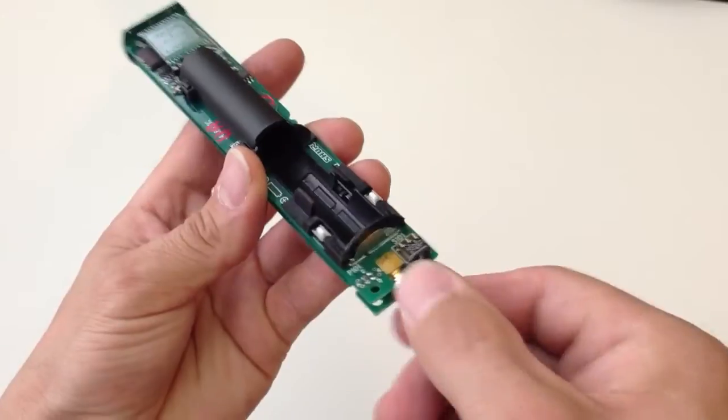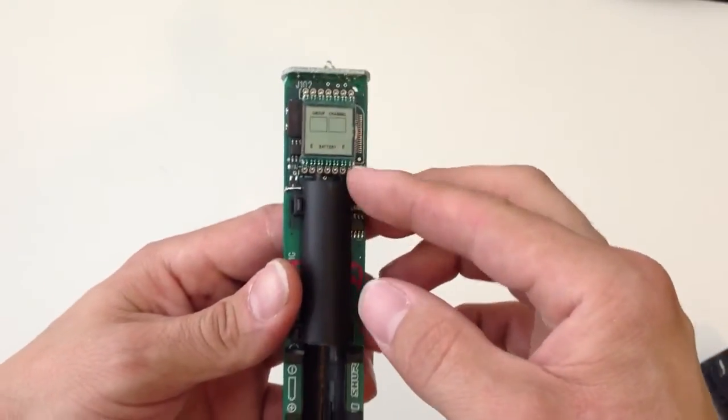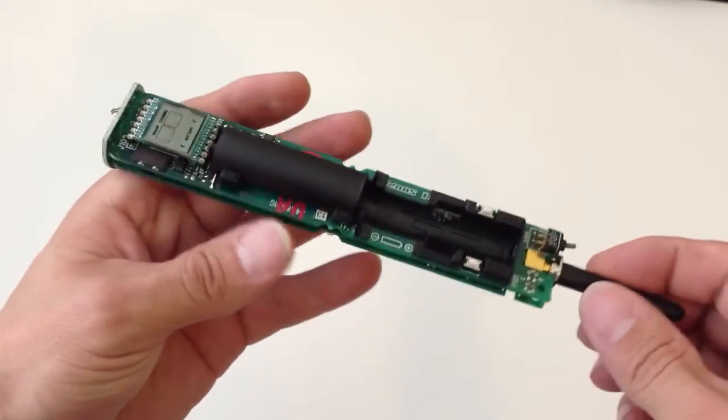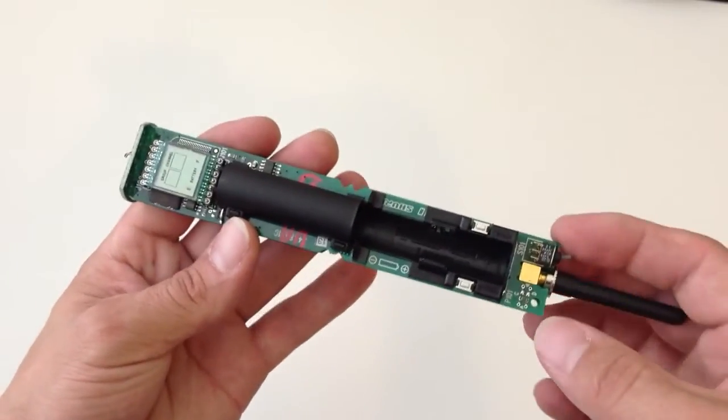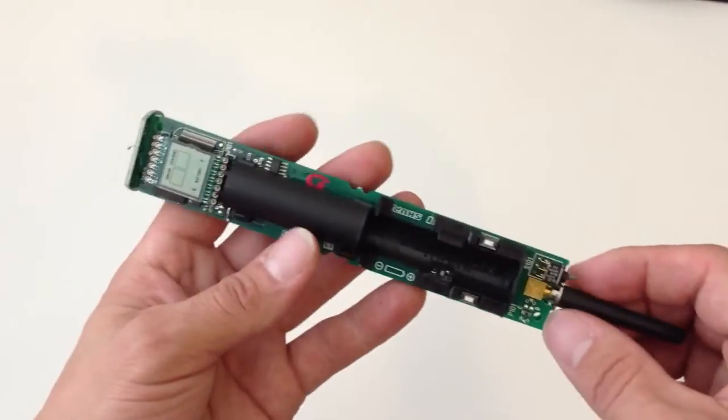We can access the antenna and we can change the screen if it's damaged. Here are all the electronic components. So that's how you take apart a Shure wireless microphone.